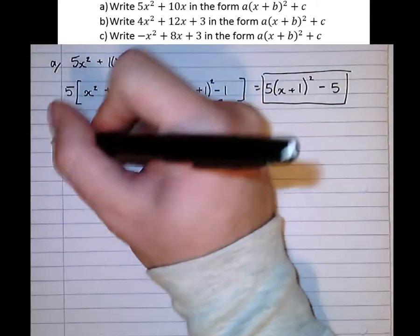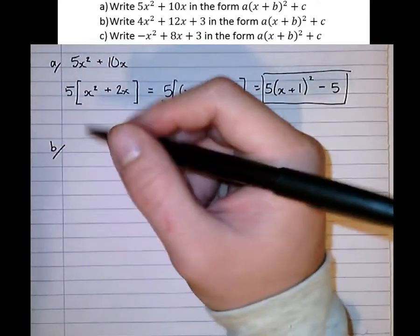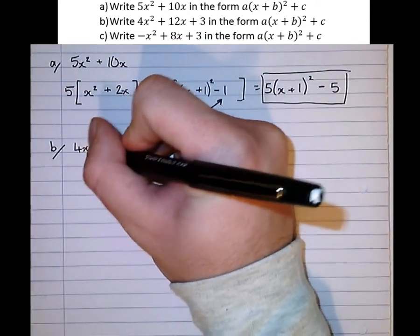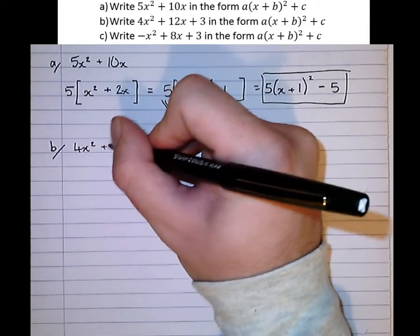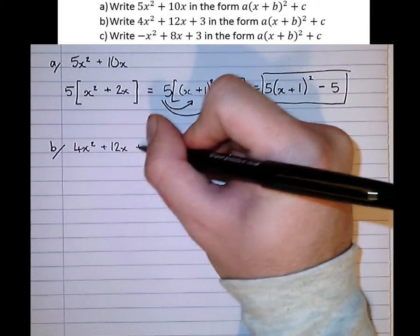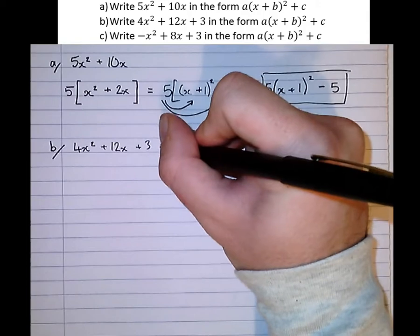Let's try a slightly more complicated one now. Part B. 4x squared plus 12x plus 3. So again,